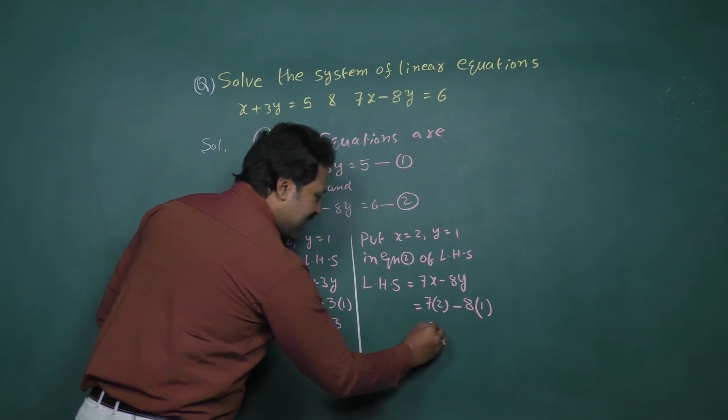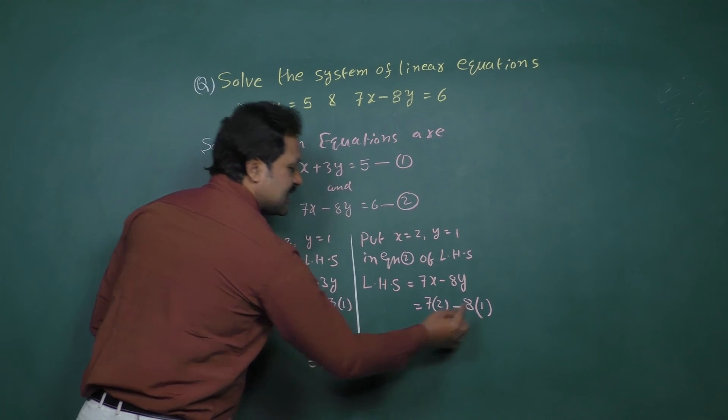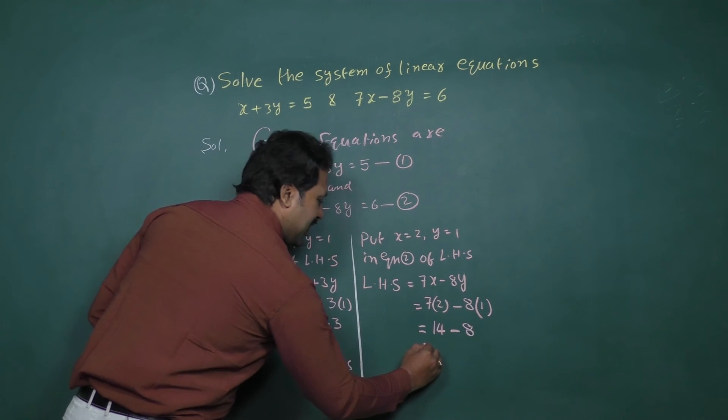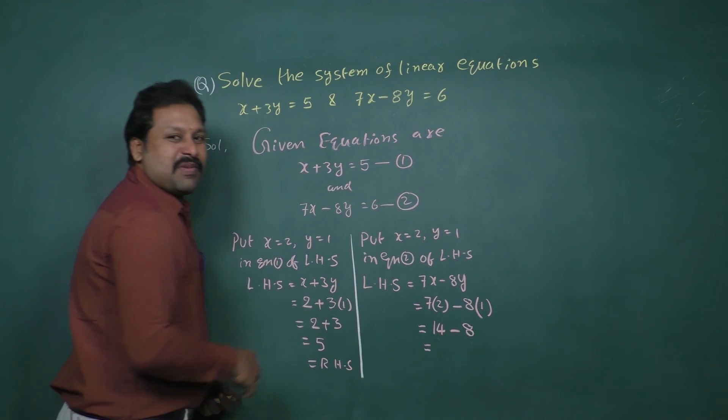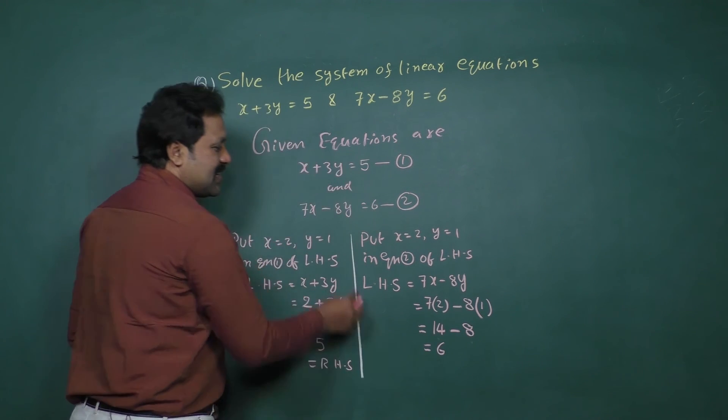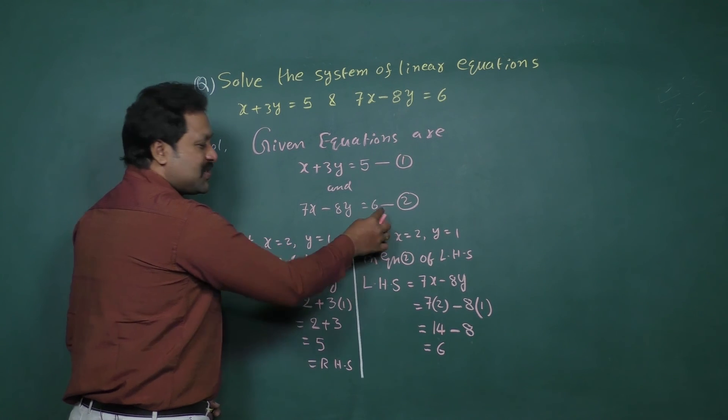2s are 14 minus 8 equal to 14 minus 8 going to be 6. So this is our RHS value.